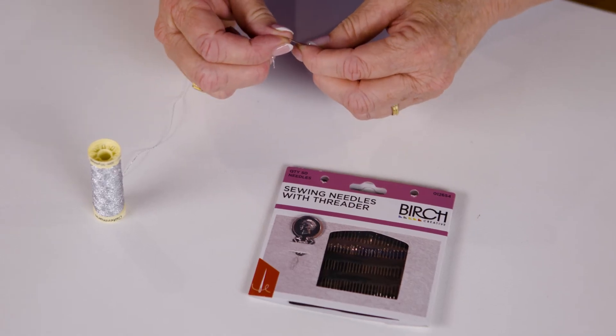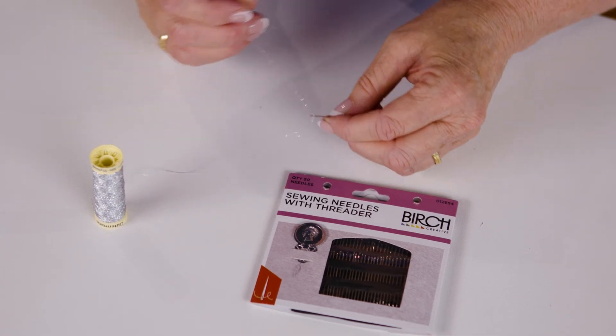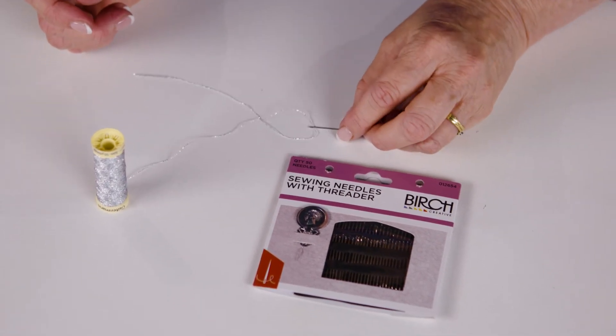Metallic threads are also designed for hand stitching only and they're wrapped in a shiny metal to give a special finish to your project. You'll need to use a needle designed specifically for metallic threads as this type of thread can't be used in a machine.